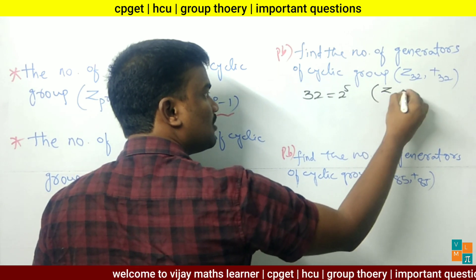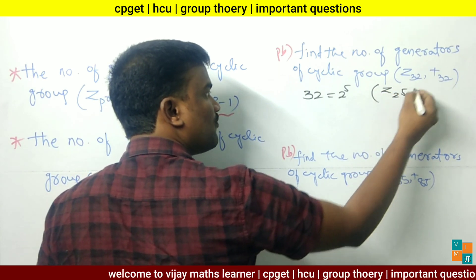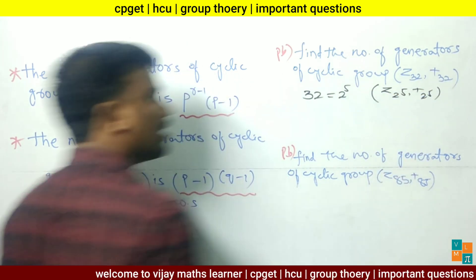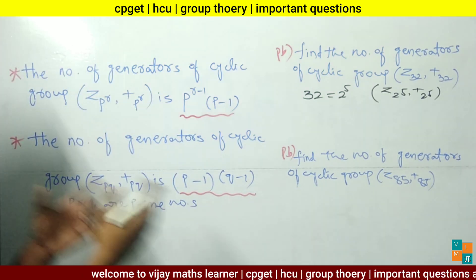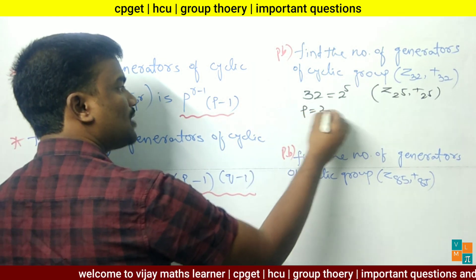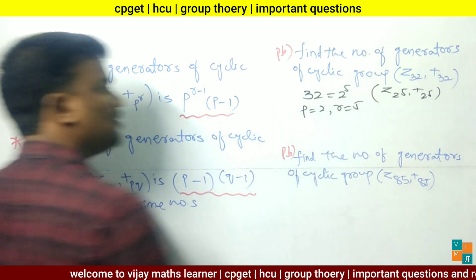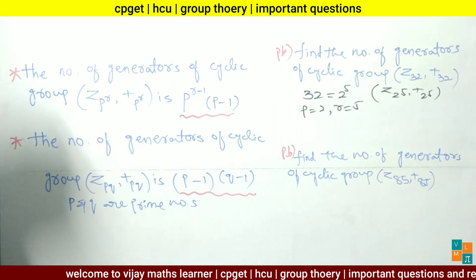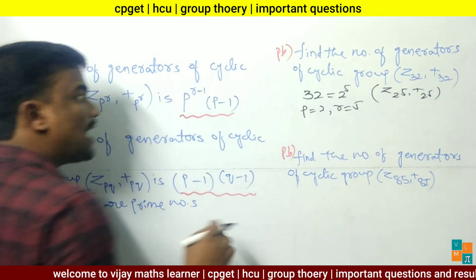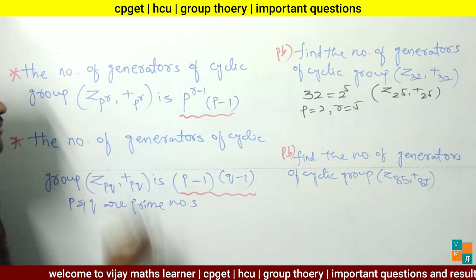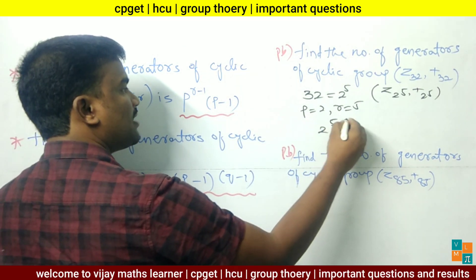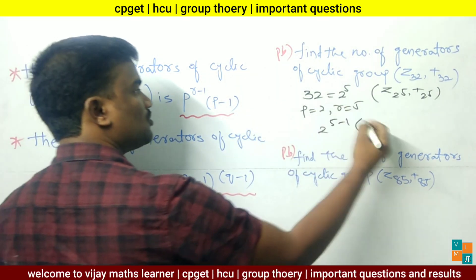So the cyclic group becomes Z(2^5) with addition modulo 2^5. From this, we observe that p equals 2 and r equals 5. Now substitute these values in the formula: 2^(5-1) into (2-1).